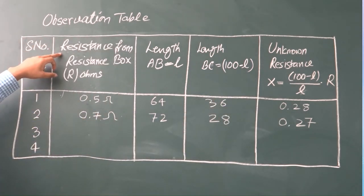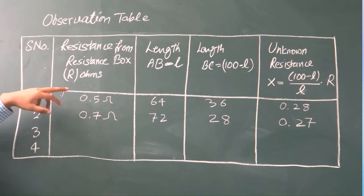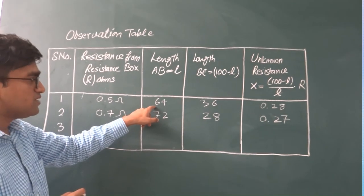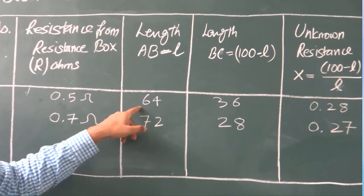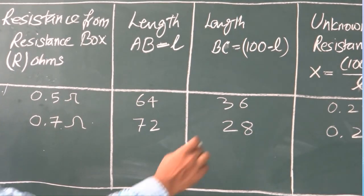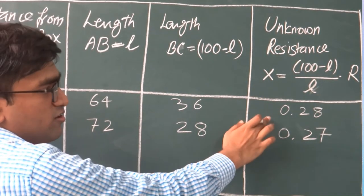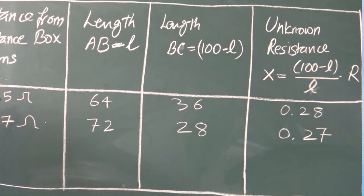First is the resistance from the resistance box. First we are taking out 0.5 ohms. The corresponding balance point from the left, that is L, is equal to 64. 100 minus L would be 36. Then substitute these values in the formula. The value comes out to be 0.28 ohms.